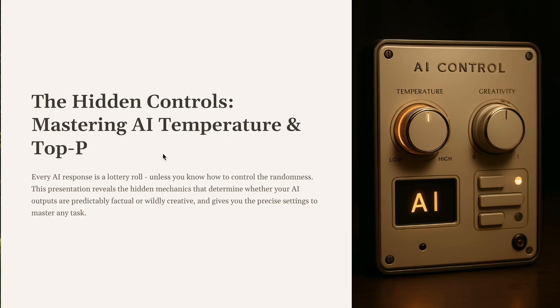The reason for that randomness is a hidden control panel, and the most important dial is temperature. Think of it as a creativity thermostat. But to really understand what this dial does, we need to look under the hood at how an AI chooses its next word.